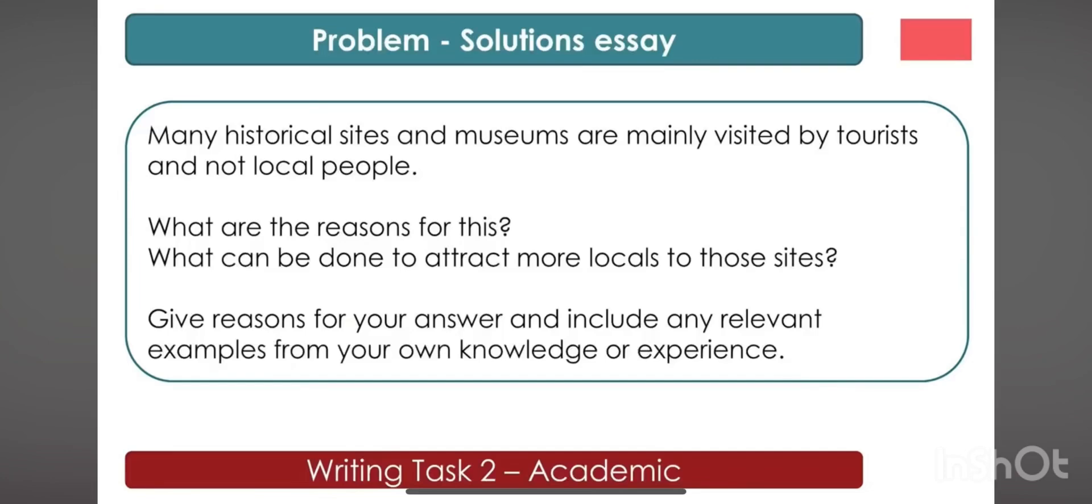Now, first of all, you write the reasons. First, plan how to write this essay. First of all, think about the reason why local people not come to their site, and then in the second paragraph, you write down the solution: what can be done to attract more local people to the site. How to write Task 2? First of all, the introduction, paragraph one, paragraph two, conclusion is the most important.